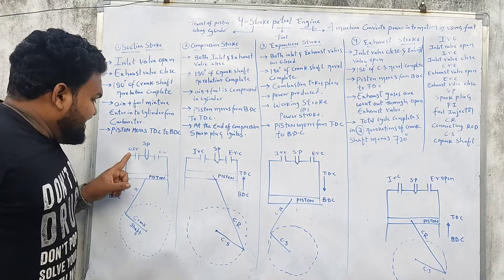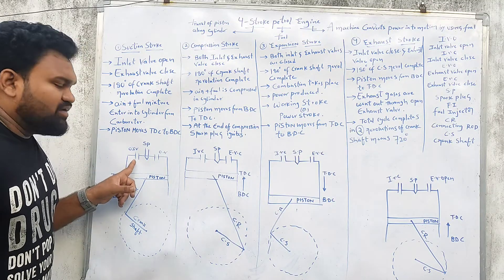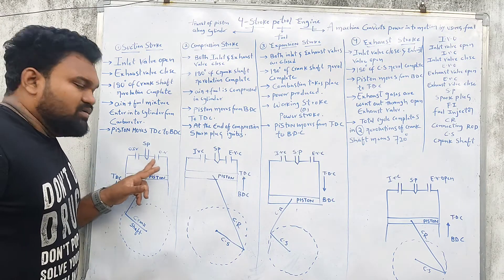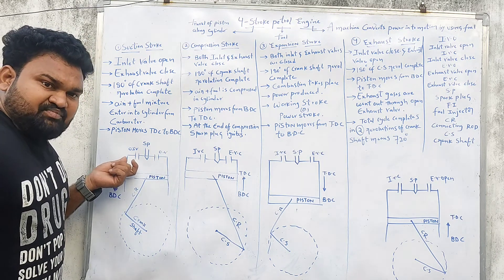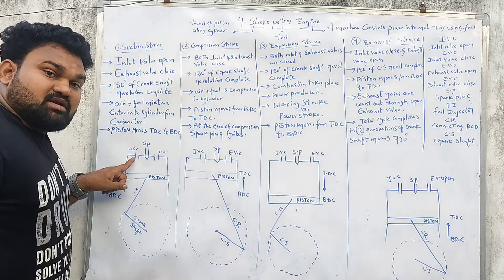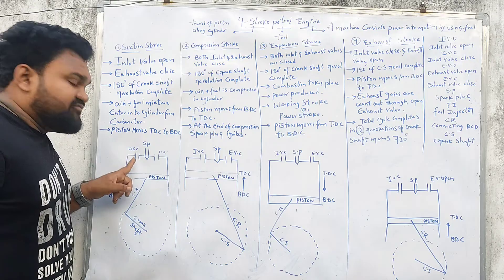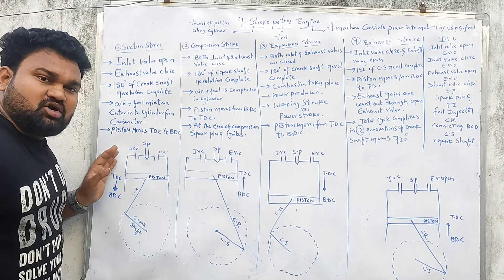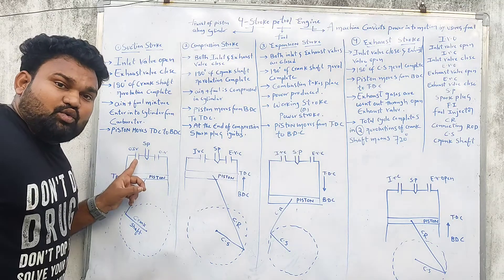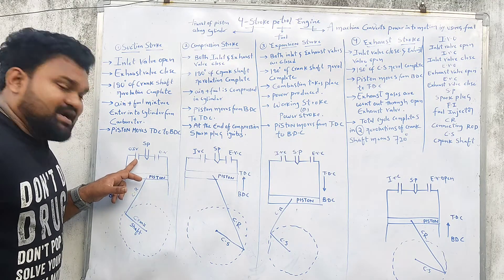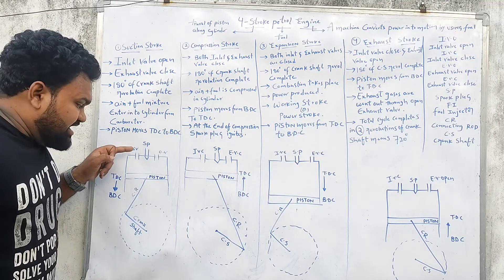In this unit there is an inlet valve and an exhaust valve. What happens at the inlet valve during the first stroke? The inlet valve is open, and the air plus fuel mixture enters the cylinder.